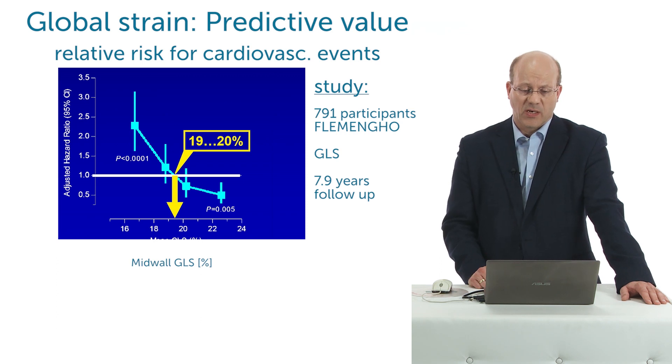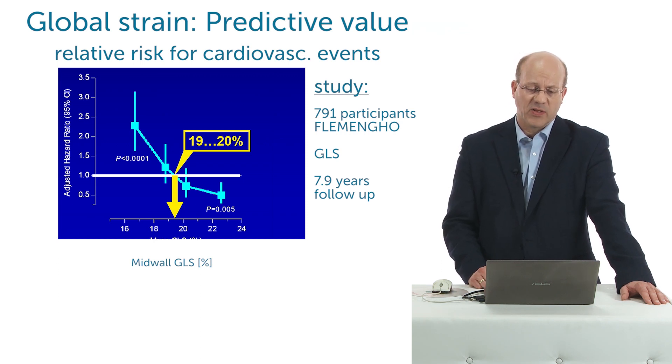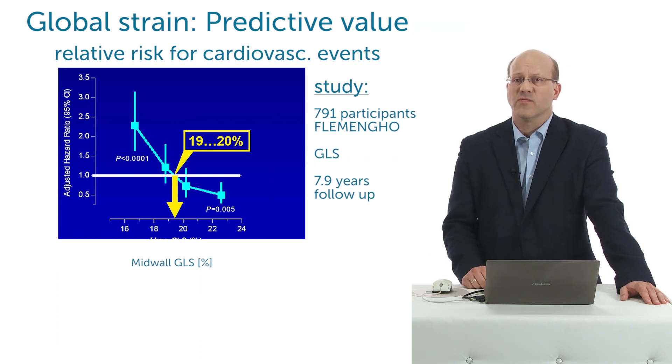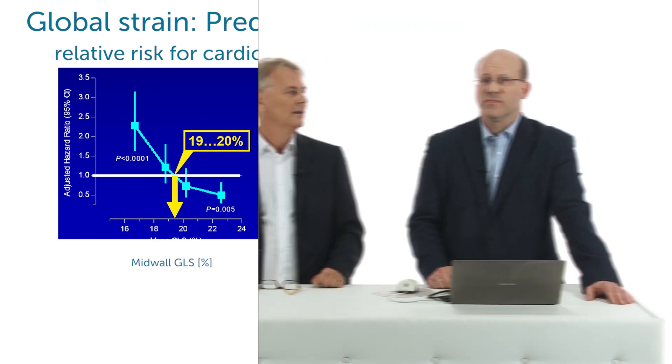So between 19% and 20% — if the strain goes below that, then the relative risk of these patients is higher. This is a very impressive study; eight years of follow-up is very long, with a large number of patients and, finally, hard endpoints.